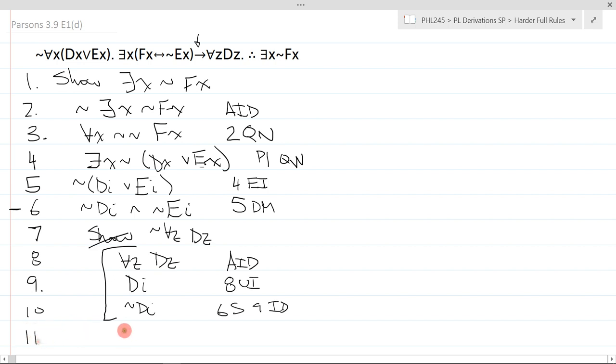The point of that was so I could modus tollens that premise and get NOT there exists X if and only if NOT EX. And that is line 7, premise 2, modus tollens.